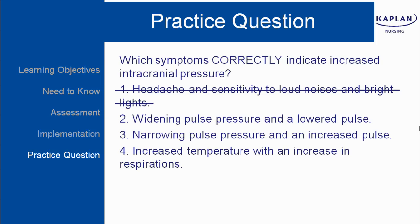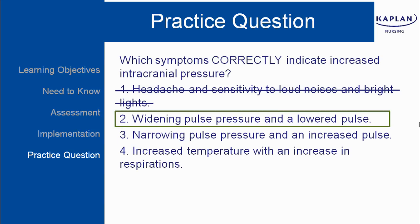Headache and sensitivity to loud noises and bright lights is incorrect — that's more symptoms for meningitis. Widening pulse pressure and a lowered pulse are symptoms of increased intracranial pressure, one of the three symptoms that form that triad. Narrowing pulse pressure and an increased pulse is incorrect. Increased temperature with an increase in respirations is not going to tell you about increased intracranial pressure. Number two is the correct answer.